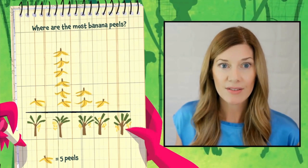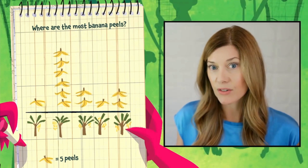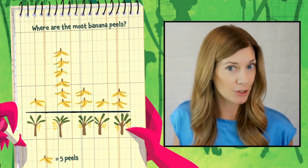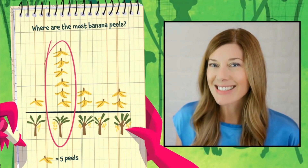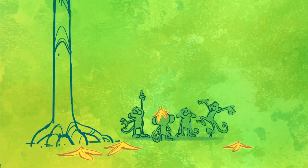Then she drew the rest. When Daphne's graph was complete, she used it to answer her question: which tree has the most banana peels under it? Do you know? That's right — the second tree had the most banana peels. "Aha," Daphne said, "the culprit has been eating bananas from this tree." Everyone looked up. What did Daphne and the monkeys find in the problem tree?